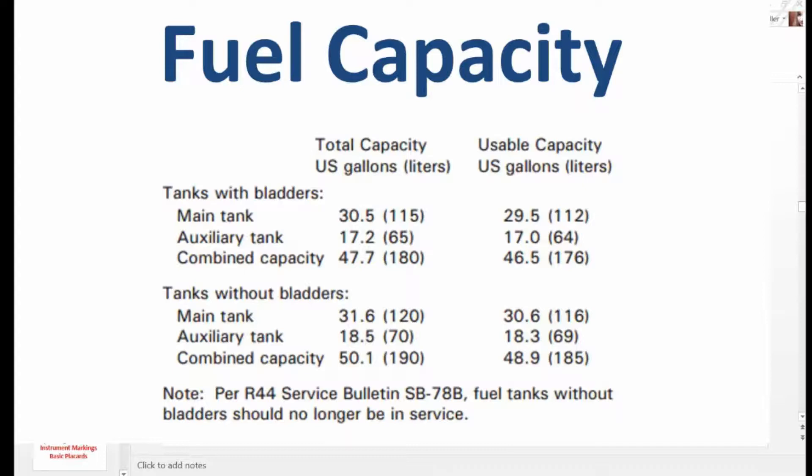Fuel capacity. Tanks with bladders, main tank 30.5 gallons, 115 liters is total capacity. Usable capacity, 29.5 gallons, 112 liters. That was for the main tank. Auxiliary tank, 17.2 gallons, 65 liters total.